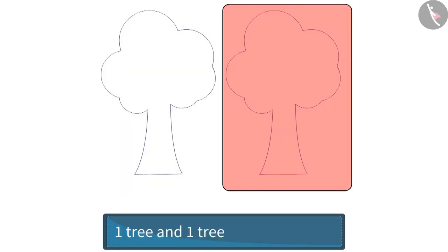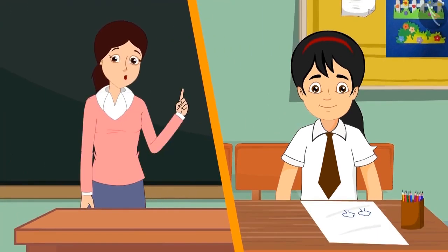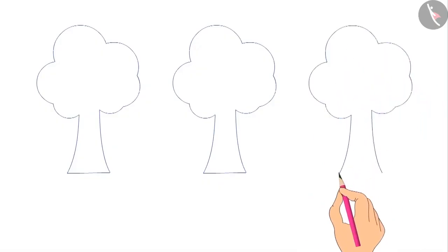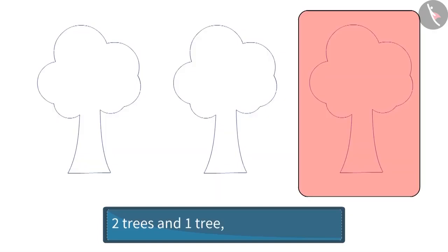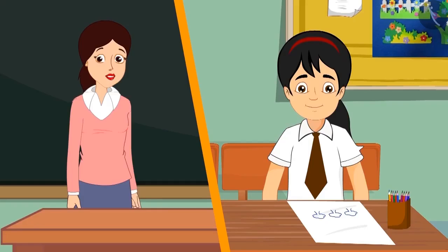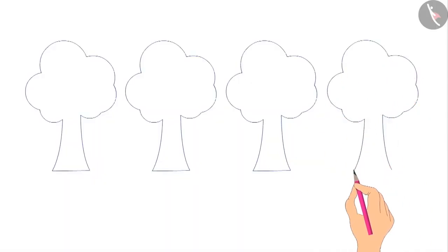Pinky, what have you drawn? At first I drew one tree, then I drew another tree, so in total I drew two trees. If you draw another tree, how many trees will there be? Two trees and one more tree — so now in total there are three trees. Very good, Pinky!